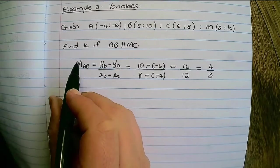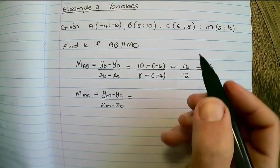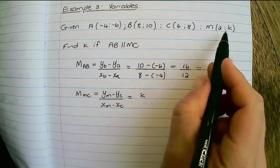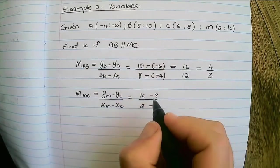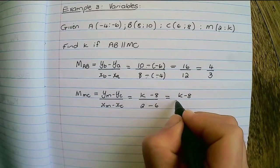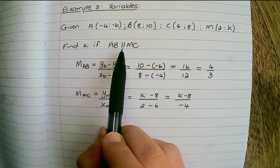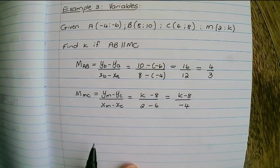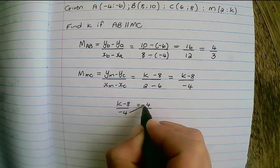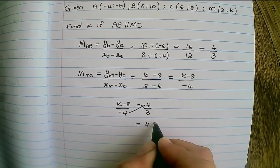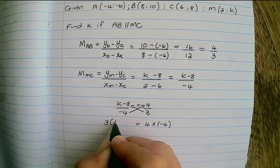Now let's find the gradient of MC. The y-values give us k minus 8, and the x-values are 2 minus 6, so we have k minus 8 over negative 4. Because these two lines are parallel, we can set the two gradients equal to each other. To simplify, we cross multiply: 4 times negative 4, and k minus 8 times 3.